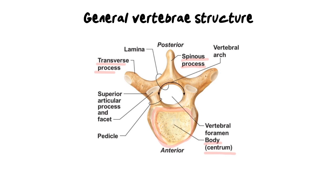Then we have the transverse process — these elongated pieces of bone that go off to the left and right, like little wings on either side. Then there are the articular processes and facets — two on either side, two on the ends of the transverse processes, and two at the back. All of those facets are for other bones to rub up against, whether ribs or other vertebrae. The vertebral arch and vertebral foramen make space for the spinal cord — the arch is the arch in the bone, and the foramen is the hole in the center where the spinal cord passes through. In some textbooks these are called the neural arch and neural canal.